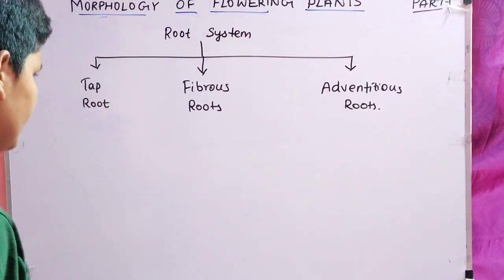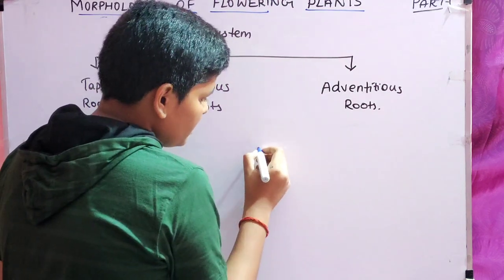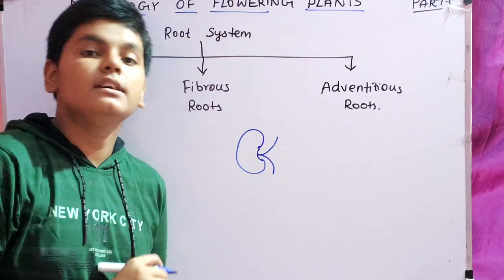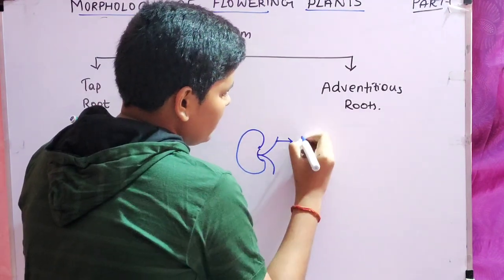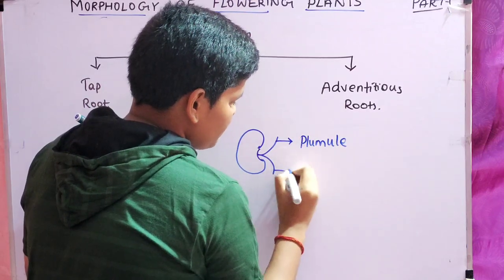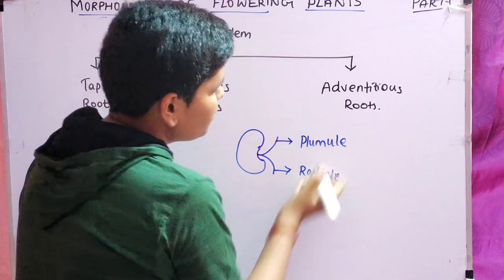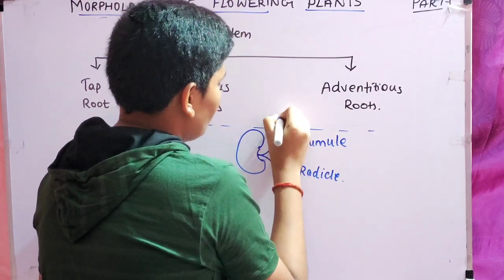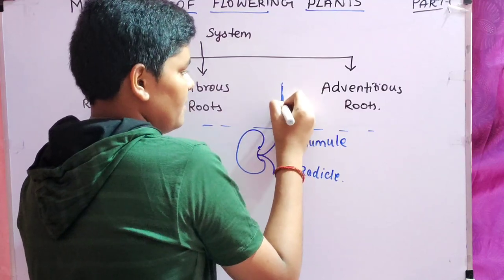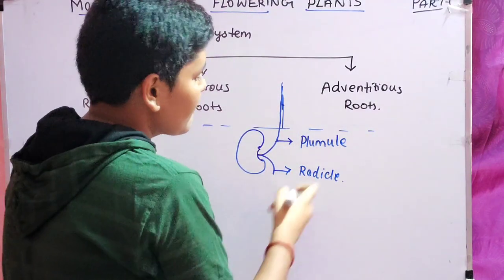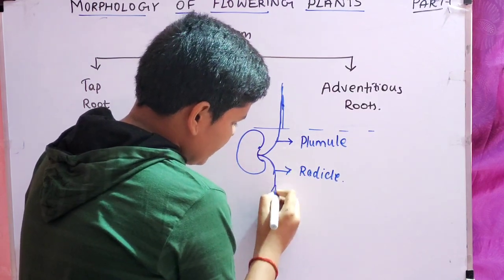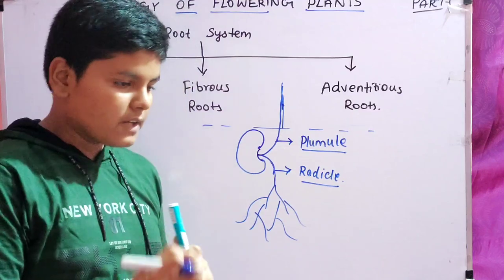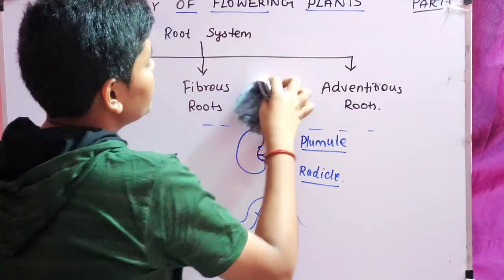Before moving on, consider a seed. From the seed, two things come out: one is called the hypocotyl and one is called the epicotyl. One part is called plumule and one part is called radicle. The plumule comes out of the ground and develops into the shoot system — the stem, branches, and leaves. The radicle goes down, elongates, and forms the root system. So radicle is the part from which the root system develops and plumule is the part from which the shoot system develops.